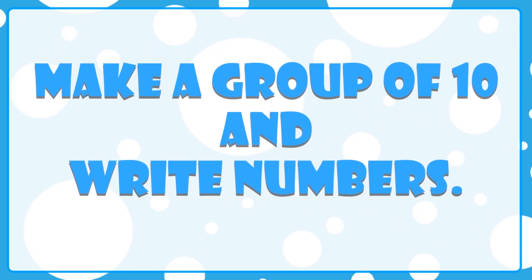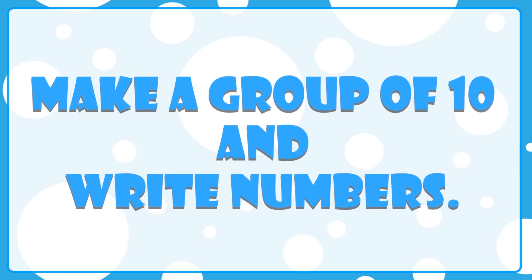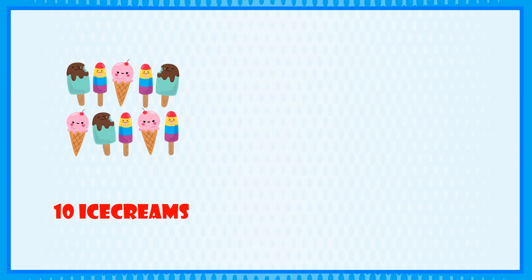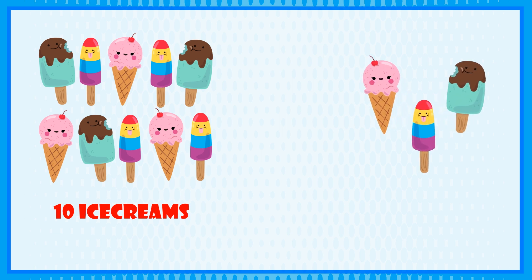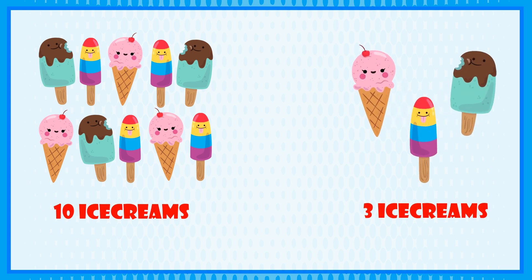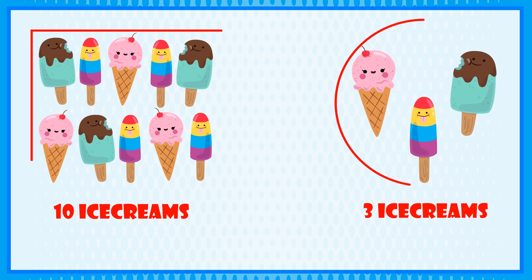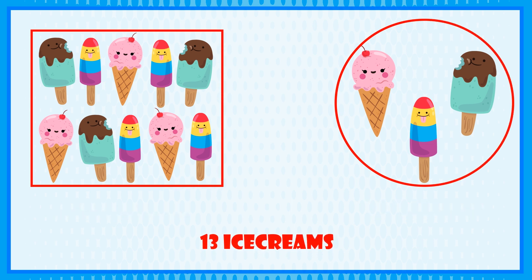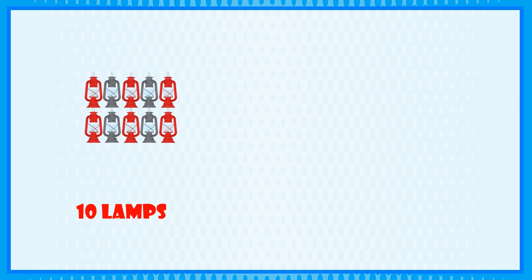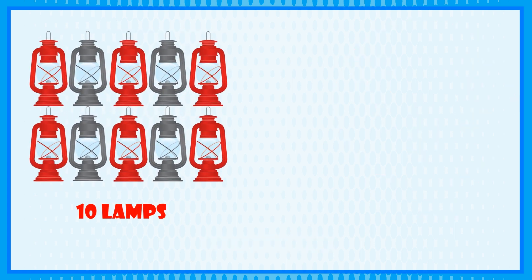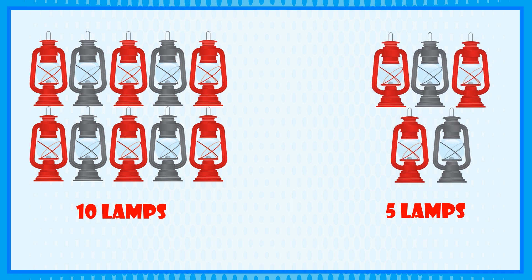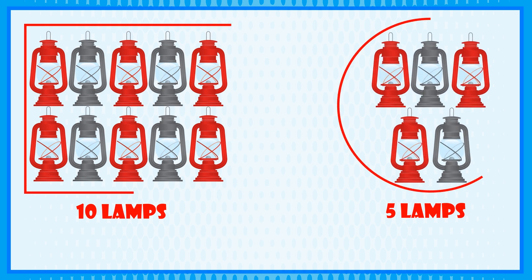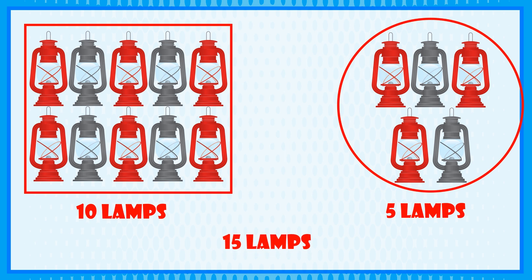Make a group of 10 and write the numbers. 10 ice creams plus 3 ice creams will make 13 ice creams. 10 lambs plus 5 lambs is equal to 15 lambs.